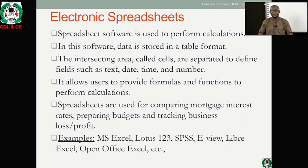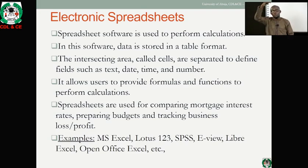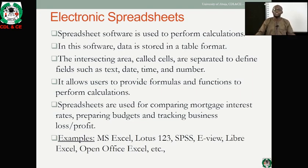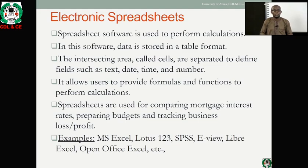In spreadsheet software, data is stored in a table format in rows and columns. The intersection area is called a cell, which is referenced by an address — for example, C5 means column C and row 5. Electronic worksheets have embedded functions such as SUM for summation, AVERAGE for class averages, and IF for testing grade boundaries — for example, the grade A has an upper limit of 100 and a lower limit of 70.